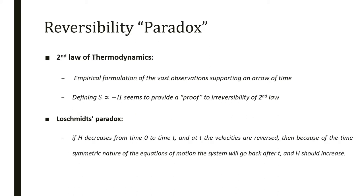To set this preferred direction in time was not a new result. We already had the second law of thermodynamics stated before Boltzmann by Clausius and Carnot, an empirical formulation that supported what was observed in the macroscopic world. Things go forward in time but don't reverse. Now, if we define S as proportional to minus H, we could provide a kind of proof of this irreversibility of the second law, and this was not very well accepted.